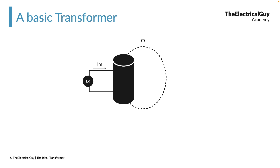As you can see in the image, we have a coil connected to an alternating supply Eg. This coil has N number of turns. The moment we connect the supply Eg to the coil, the magnetizing current Im will start flowing through the coil, and this magnetizing current will create a flux phi in the coil. As we saw in the previous video, due to Faraday's law of electromagnetic induction, a voltage will be induced across the terminals of the coil.